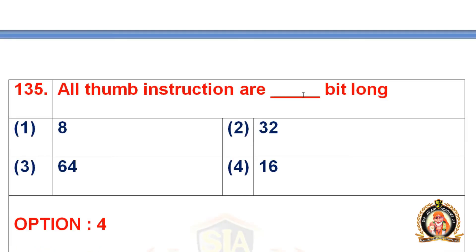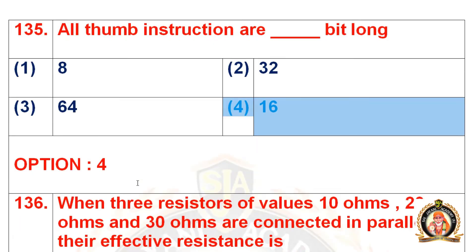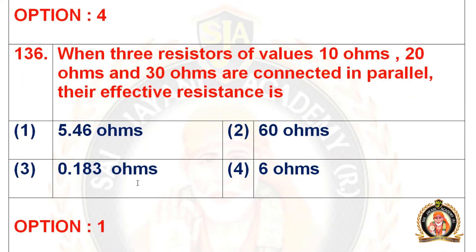Question 135: All Thumb instructions are dash bits long. Options are 8 bit, 32 bit, 64 bit, and 16 bit. The right option is the fourth option, that is 16 bit. All Thumb instructions are 16 bits long.